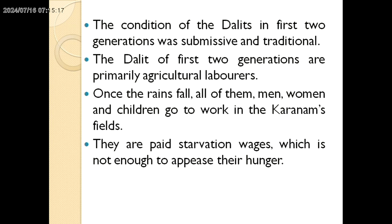The condition of the Dalits in the first two generations was submissive and traditional. The Dalits of the first two generations are primarily agricultural labourers. Once the rains fall, all of them — men, women and children — go to work in the Karanam's space. They are paid starvation wages, which is not enough to appease their hunger.